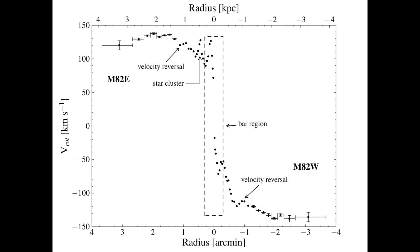A few interesting features in our rotation curve are the bar region, which can be seen as the symmetric sharp features on either side of the nucleus, and the apparent velocity reversal at 1 kiloparsec on both sides of the galaxy, which may be due to the presence of symmetric spiral arms. The horizontal error bars in this figure indicate the aperture size of the measurement, and the vertical error bars represent the uncertainty of the velocity measurement.